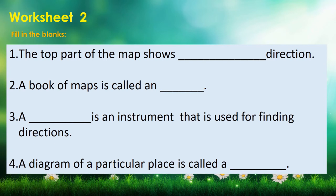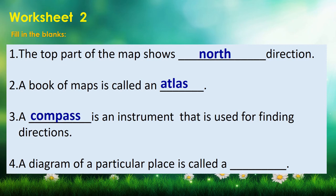Moving to Worksheet 2 — fill in the blanks. First: the top part of the map shows which direction? The answer is North. Second: the book of maps is called what? The answer is Atlas. Third: a compass is an instrument used for finding directions. Fourth: a diagram of a particular place is called what? The answer is Map.